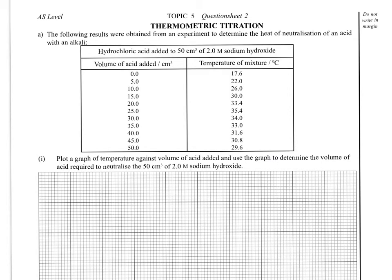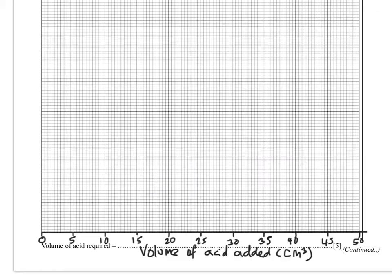Here's an example of an actual exam question with a slightly larger data set. It asks you to plot a graph of temperature against volume of acid added and use the graph to determine the volume of acid required to neutralise the 50 cm³ of 2.0 molar sodium hydroxide. Reading from left to right, we've got data set 1 with the x-axis volume of acid added and the temperature is the y-axis. Looking at my x-axis scale, it has to run from 0 to 50 in increments of 5.